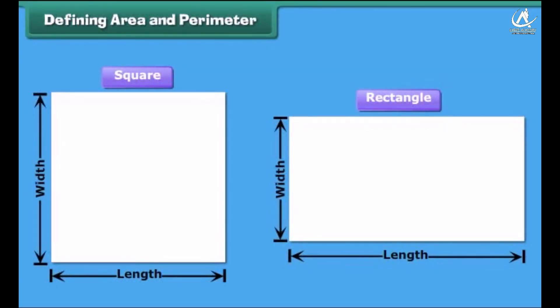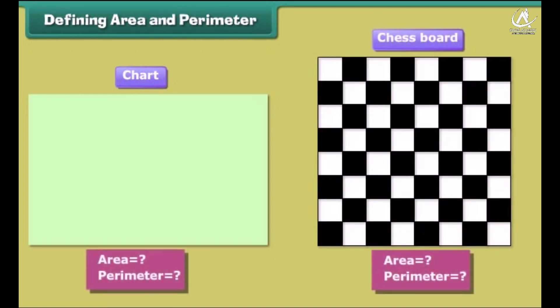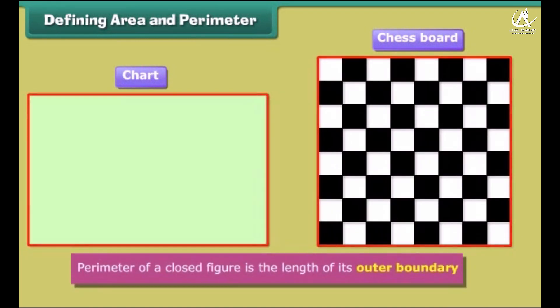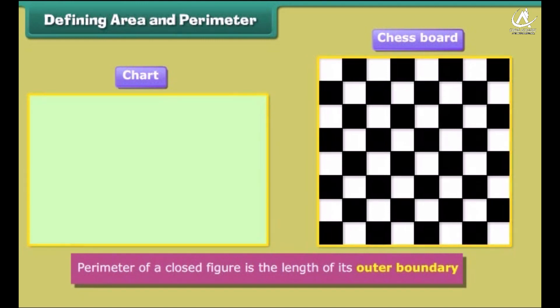Friends, we already know about closed figures like squares and rectangles. For example, this chart paper is a rectangular chart while the chessboard is a square. The measure of the region enclosed by a closed figure is called its area. Perimeter of a closed figure is the length of its outer boundary. Let us now find the ways of calculating area and perimeter of rectangles and squares.